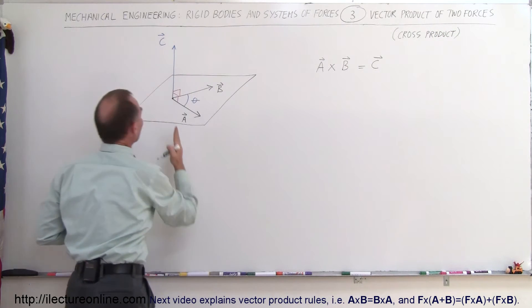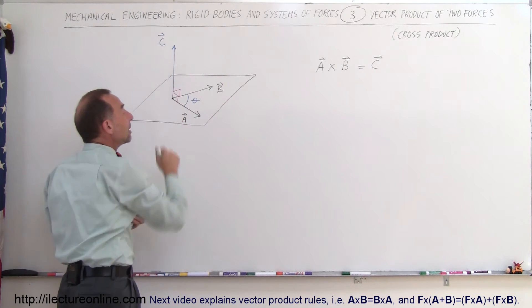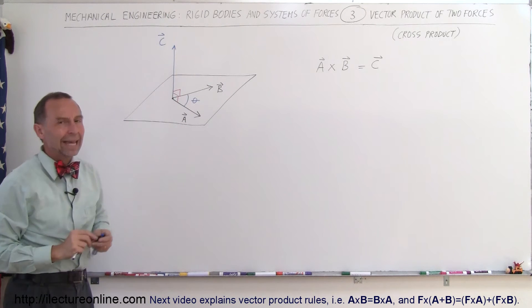Notice that the direction of that third vector, the resultant vector, is perpendicular to both A and B, which means that that vector is perpendicular to the plane formed by A and B.